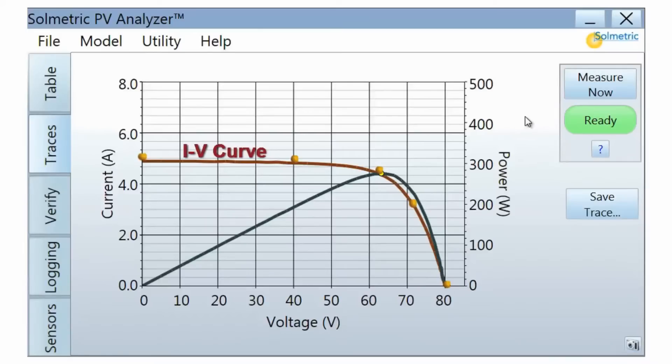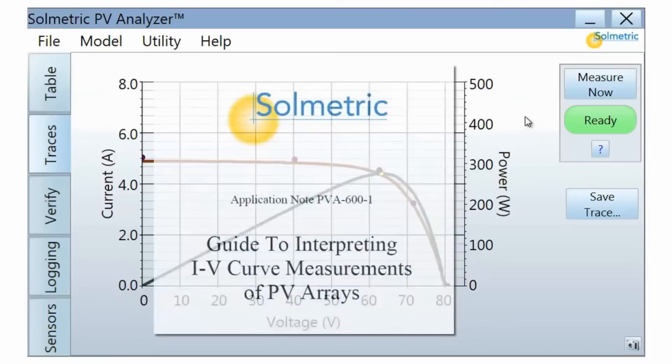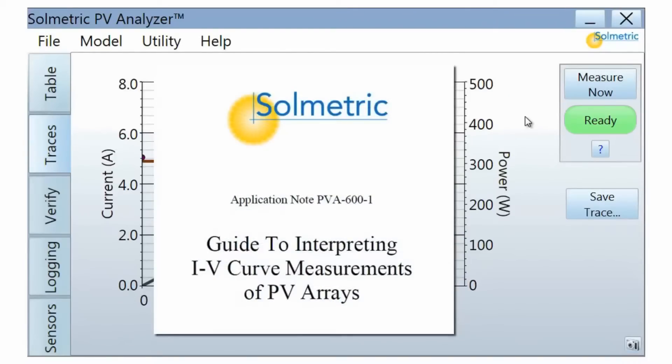An IV curve measurement that fits the predicted curve will have a high performance factor. This indicates a healthy module or string. A curve that differs from the predicted shape most likely has a performance issue. Please consult the Solmetric Guide to Interpreting IV Curves for more detailed information.